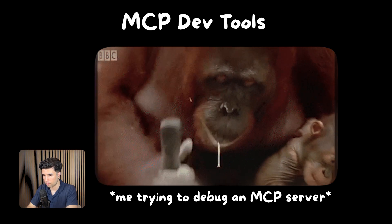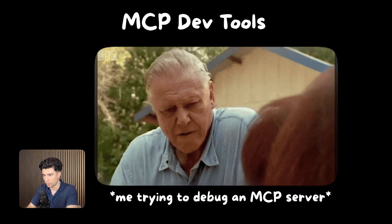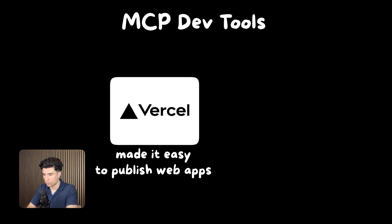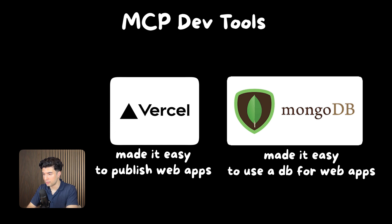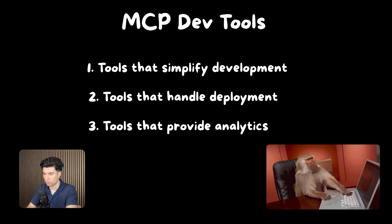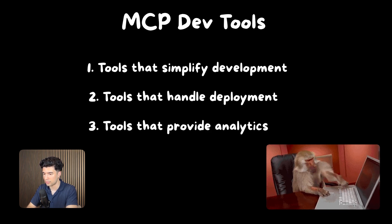MCP Development Tools — the MCP ecosystem is growing rapidly, but the development experience is still primitive compared to mature ecosystems like web or mobile. So there's a golden opportunity to create what Vercel did for front-end development, or what MongoDB did for databases, but for MCP. Current MCP development involves a lot of boilerplate code and manual infrastructure work, and developers hate unnecessary complexity. So tools that simplify development, handle deployment, and provide analytics will become essential infrastructure as the ecosystem matures.